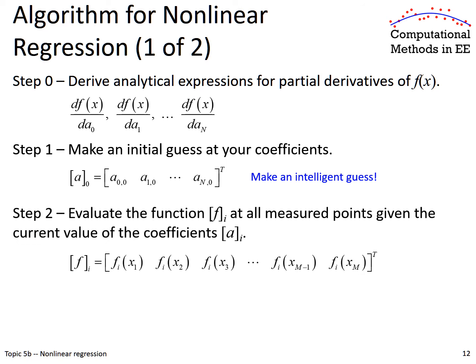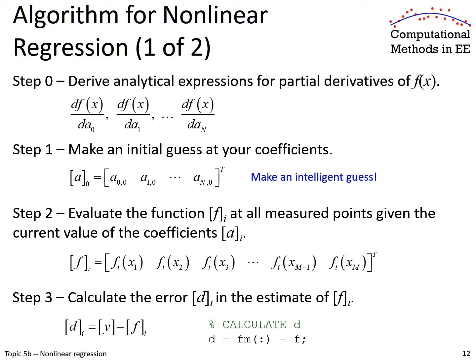Once we have those curve fit parameters as our initial guess, we want to evaluate the function at each one of our values of x using our current curve fit parameters. At first, this won't be such a great curve fit. I'm using a notation where I write column vectors as row vectors with a transpose operation — this is just shorthand that lets us write a column vector horizontally across the screen. Once we've evaluated our function at each point x, we can calculate the error term d, which is the difference between our measured values and our evaluated values. In MATLAB, this is just one line of code.